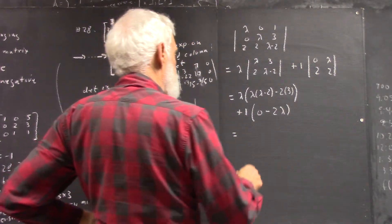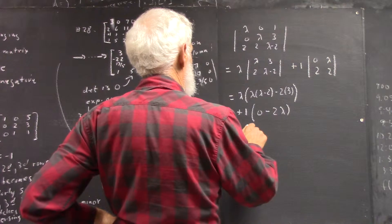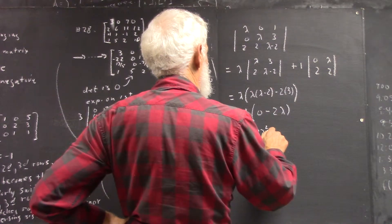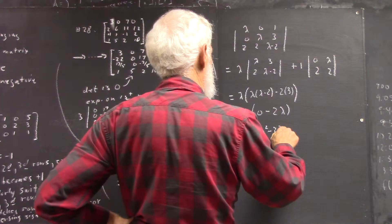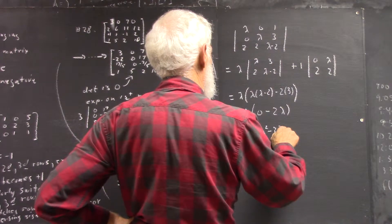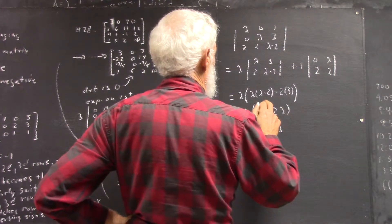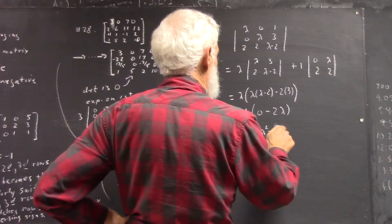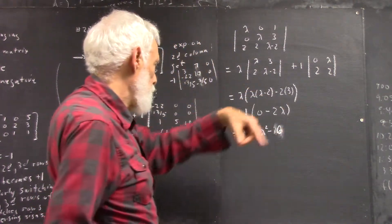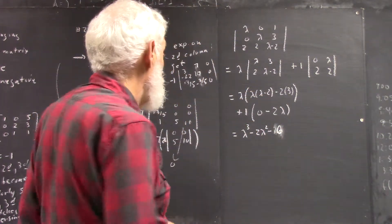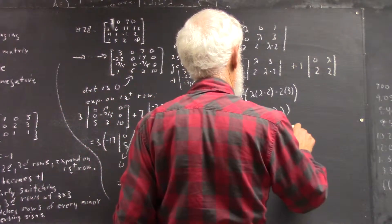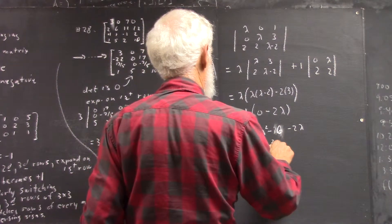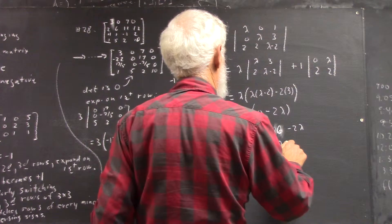So that equals lambda cubed minus 2 lambda squared minus 2 lambda. Uh-oh, wait a minute. Yeah. No, it's minus 2 lambda squared minus 6. Okay, if I expand that carefully. And then it's minus 2 lambda, so that's lambda cubed minus 2 lambda squared minus 2 lambda minus 6.